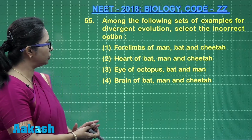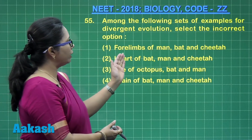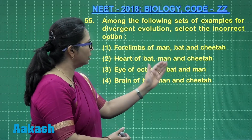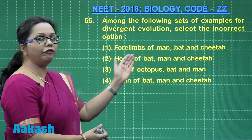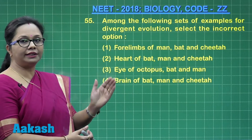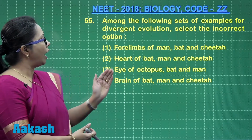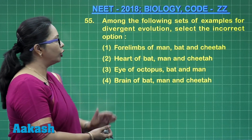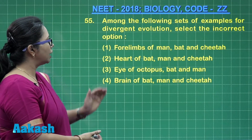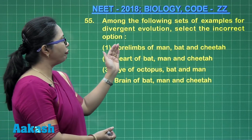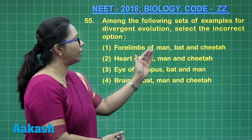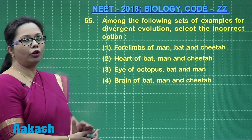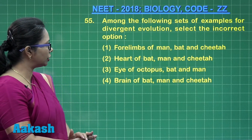Reviewing the options: forelimbs of man, bat, and cheetah — they have the same basic design and are therefore homologous structures. Similarly, the heart of bat, man, and cheetah are again homologous structures.